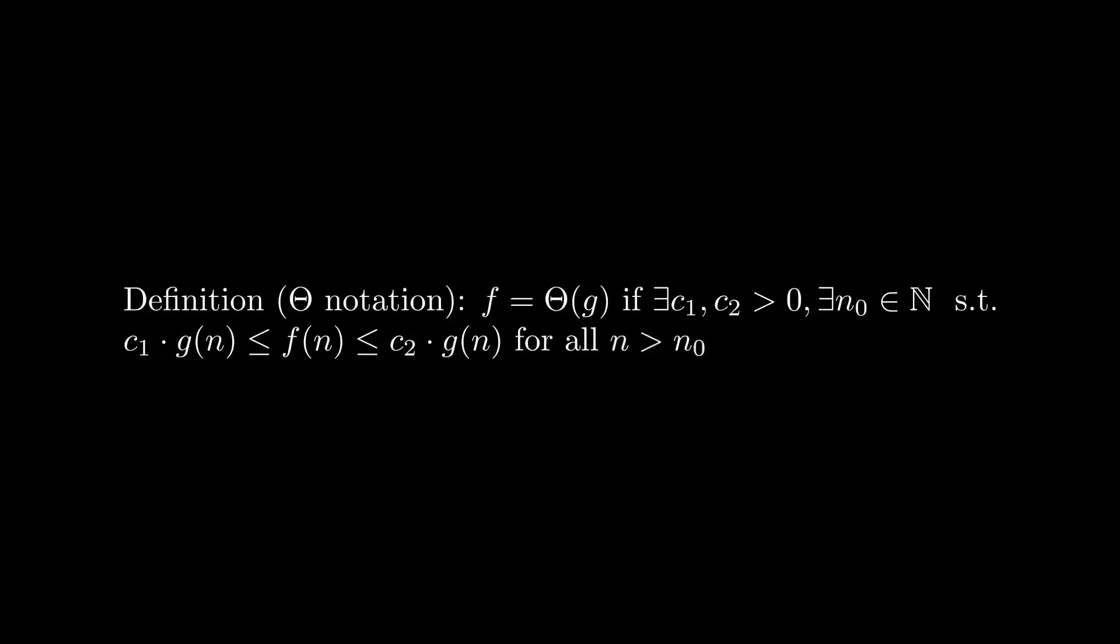Lastly, if f equals O(g) and f equals Omega(g), then we have that f equals Theta(g). In other words, there exists c1 and c2 greater than 0, such that f(n) is between c1·g(n) and c2·g(n), for all n greater than n-naught.